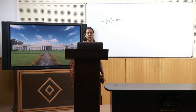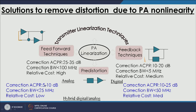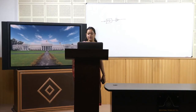If we place an element with a characteristic opposite to the power amplifier's before it, the combination of the two gives us a linear region. This pre-distortion technique has a correction bandwidth of 10 to 25 dB, which is better than feedback techniques and slightly lower than feed-forward, but with relatively lower cost since it uses fewer components.